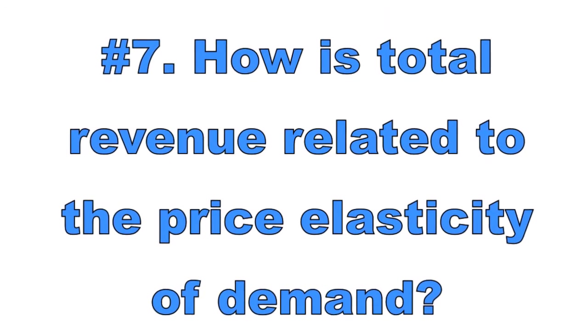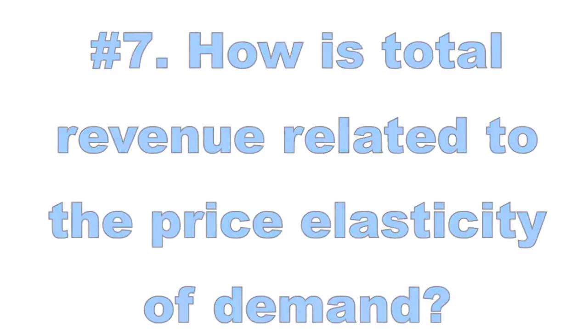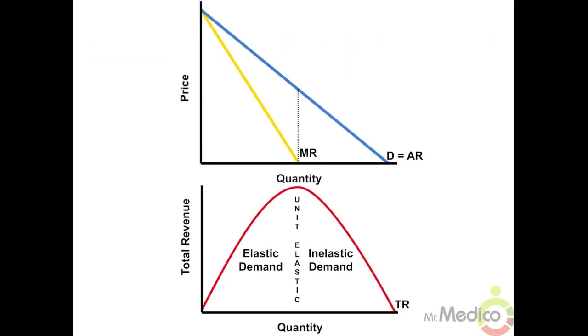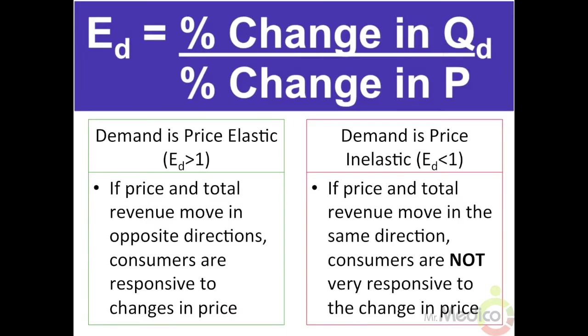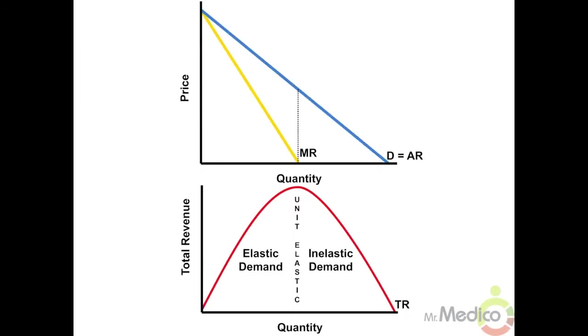Number seven: how is total revenue related to the price elasticity of demand? The total revenue test is a great way to estimate whether a good's demand is price elastic or inelastic. You need to see how price changes relative to total revenue — total revenue is price times quantity. If price and total revenue move in opposite directions, consumers are responsive to price changes, so demand is price elastic (elasticity greater than one). If price and total revenue move in the same direction, demand is price inelastic (less than one). If total revenue is constant when price changes, demand is unit elastic, meaning elasticity equals one.